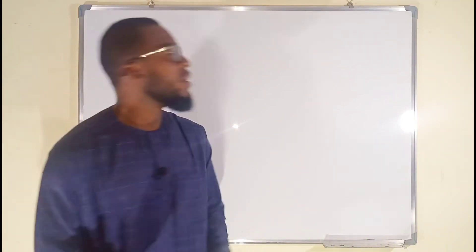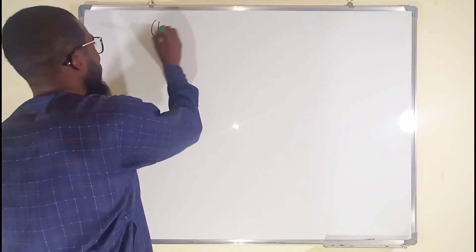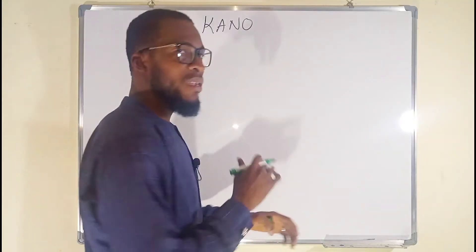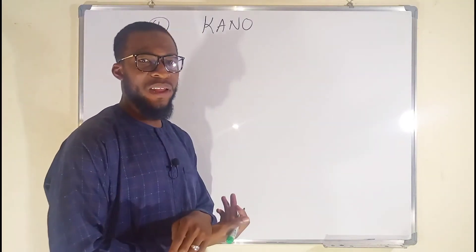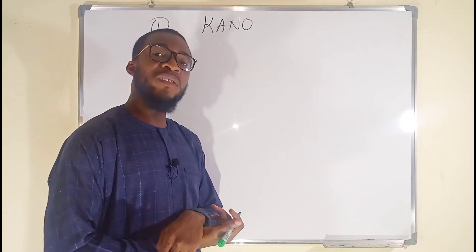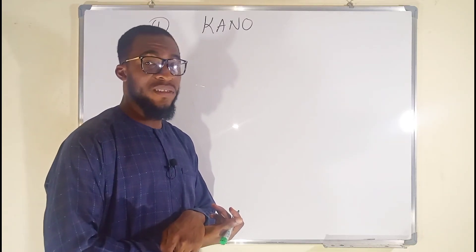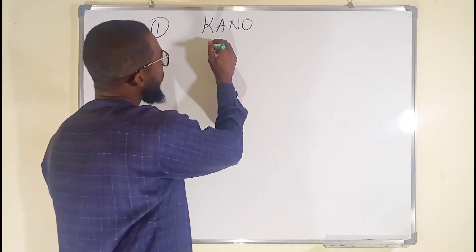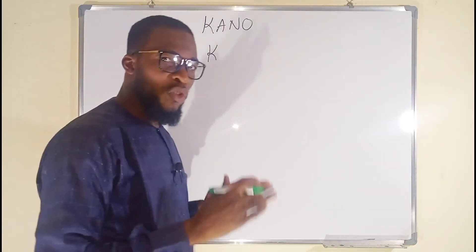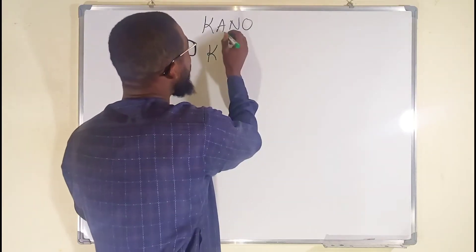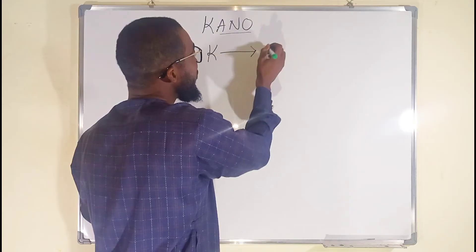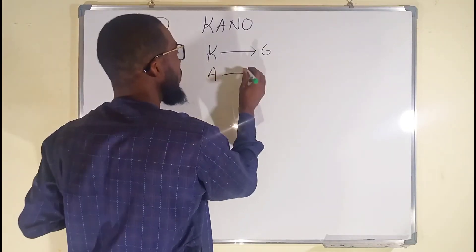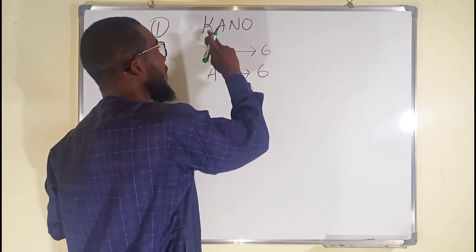Let's start with the first one. Our first question is based on how the word Kano can be rearranged in how many different ways. Kano is a 4-letter word and all of these letters are distinct without repetition. So let's assume we want K to be the first letter — we can rearrange ANO in 6 different ways. And if we consider A as our first letter, we have 6 different ways in which we can arrange KNO.